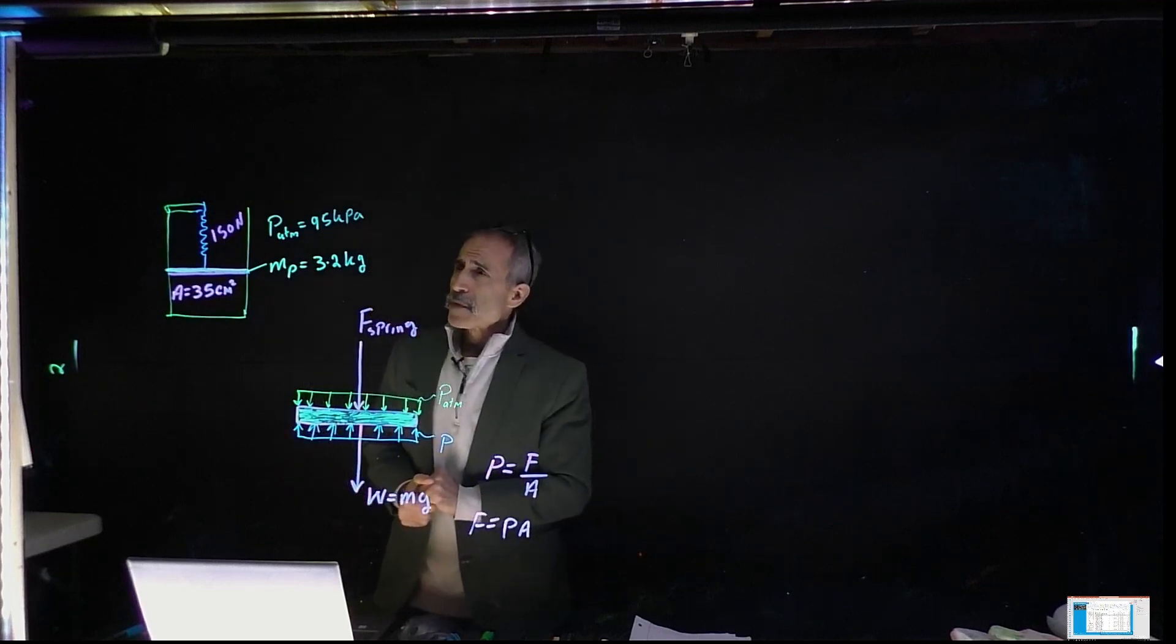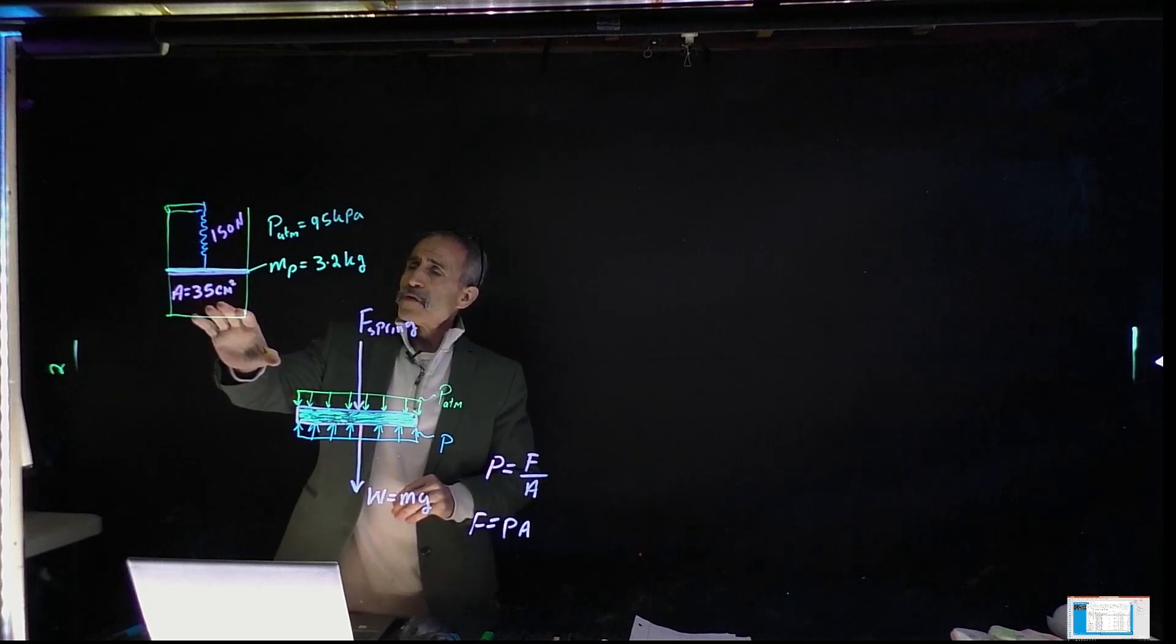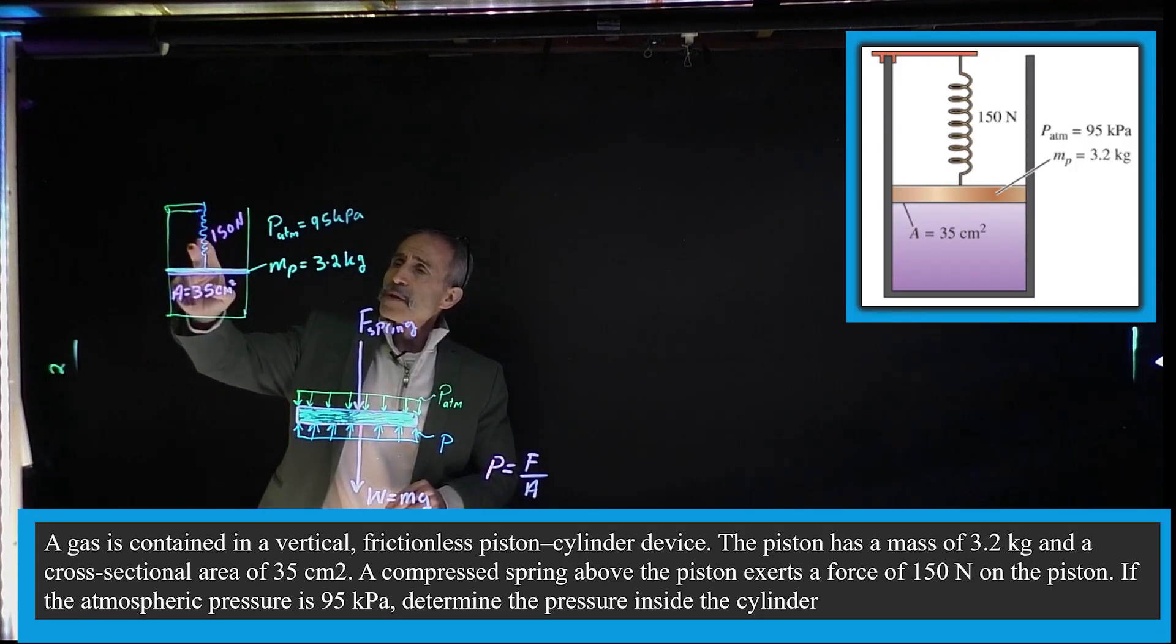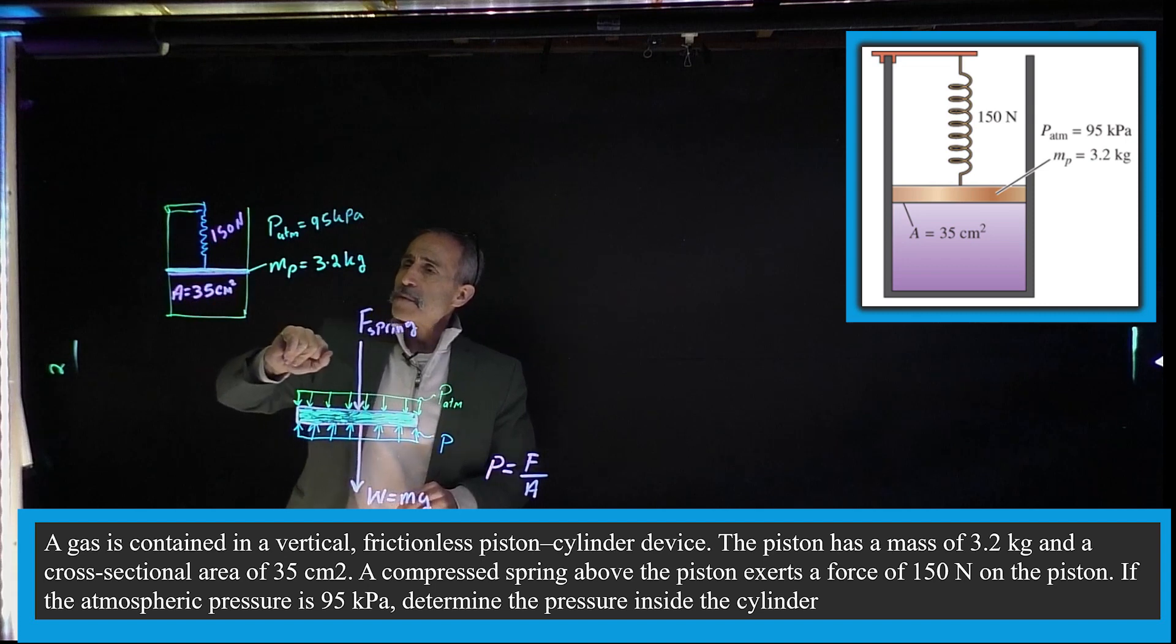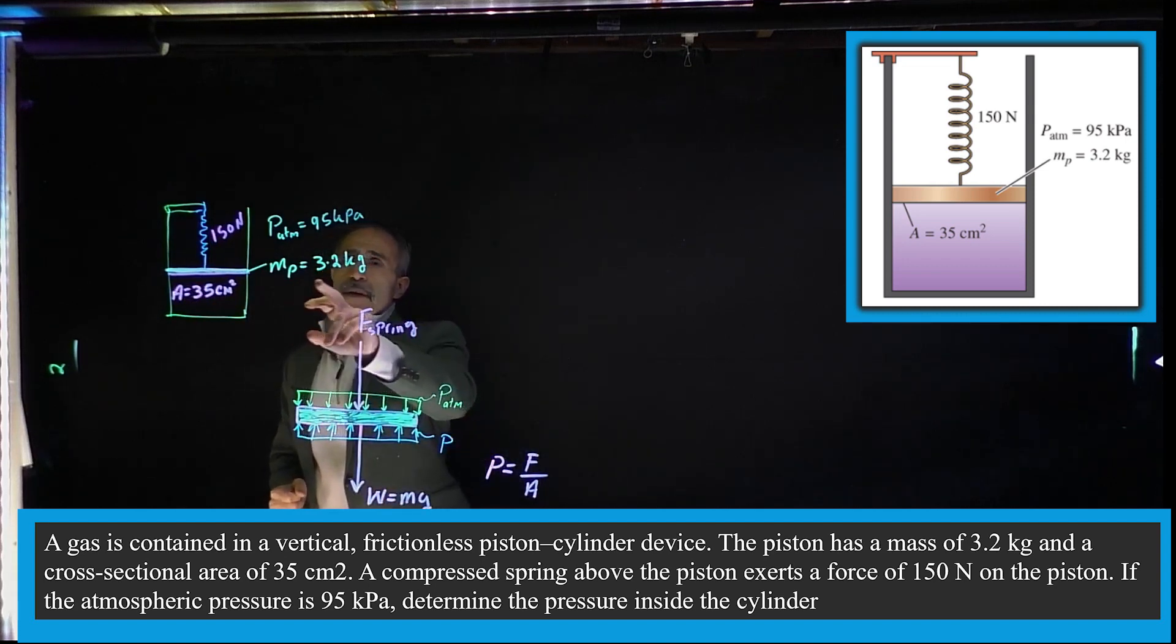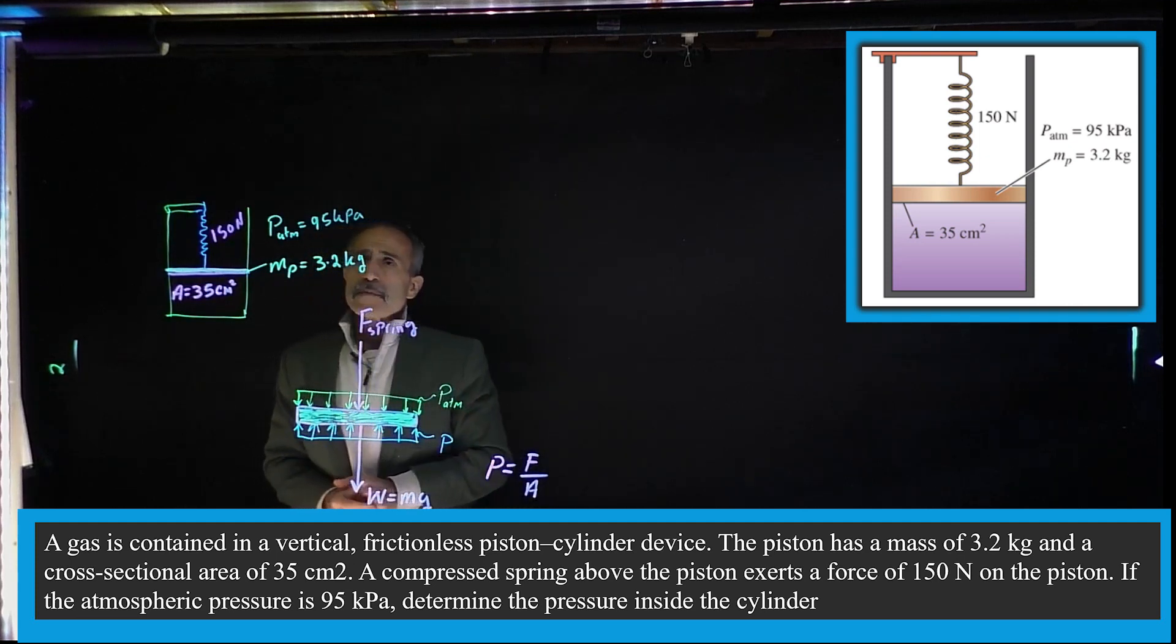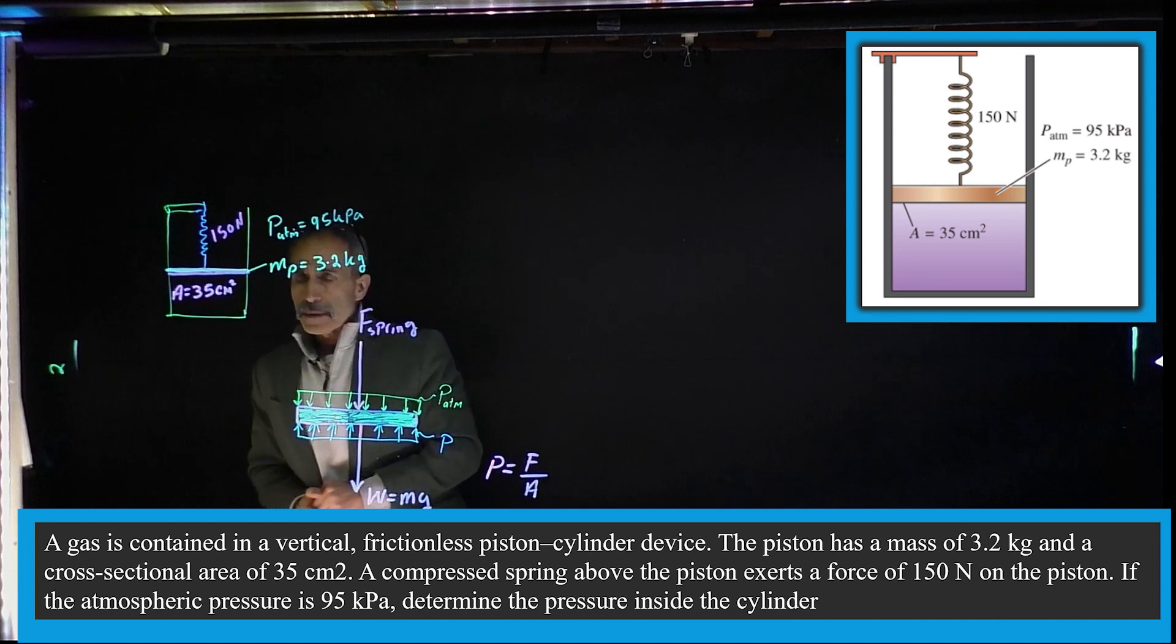Let's start out with this example. We have this piston and a gas contained here. We'd like to find out what the pressure of the gas is in this piston. We have a spring pressure from the spring of 150 Newtons pushing on the gas. The plate area is given as 35 centimeter squared, the mass of the plate is 3.2 kilograms, and the local atmosphere pressure is about one bar, close to 95 kilopascal.